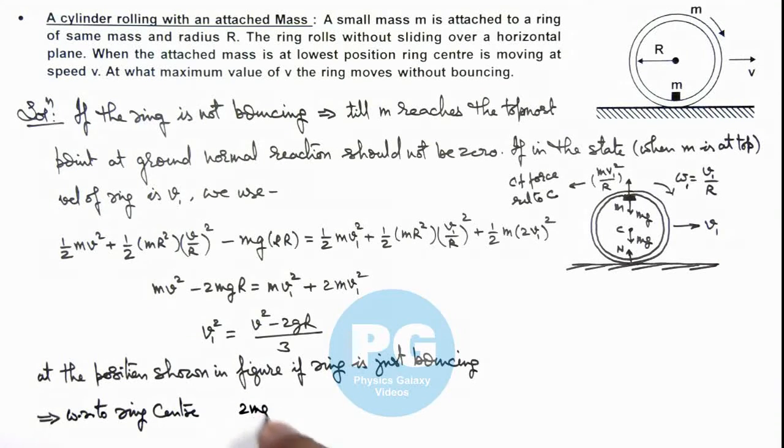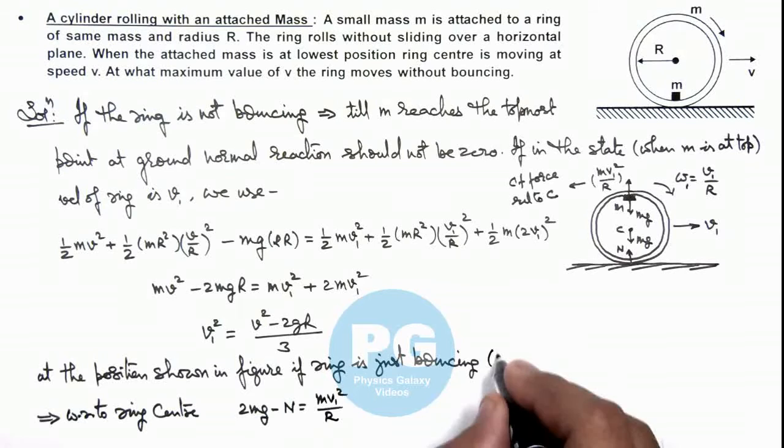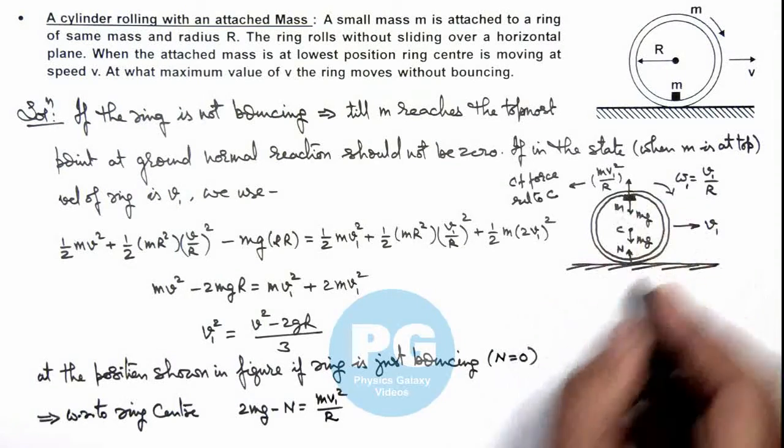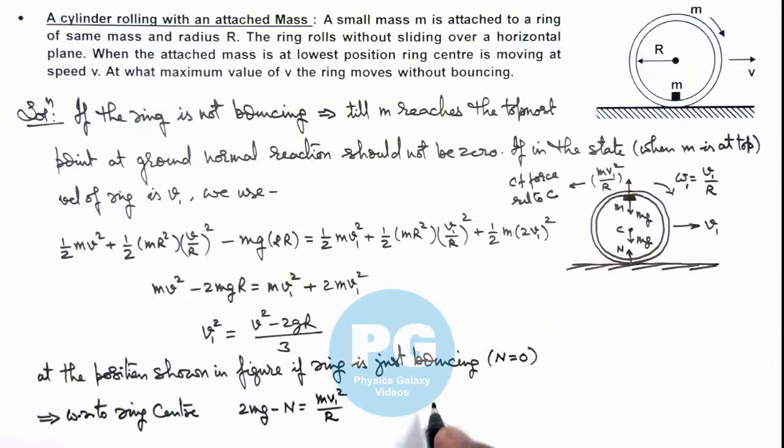2mg minus N should be equal to m v1 square by R, and here N is just becoming zero for just the state of bouncing. Physically there is no separation between the contact.